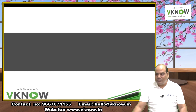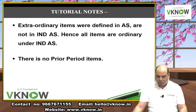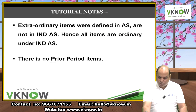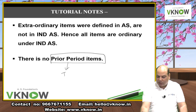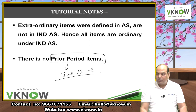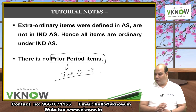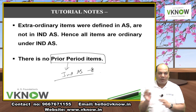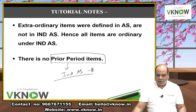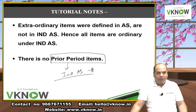Ind AS 8 handles prior period items; Ind AS 10 is also relevant. We'll keep revising standard numbers as we go. There is a new format that didn't exist in Schedule 3 Division 1 — you must learn it now. It is called SOCIE — Statement of Changes in Equity.